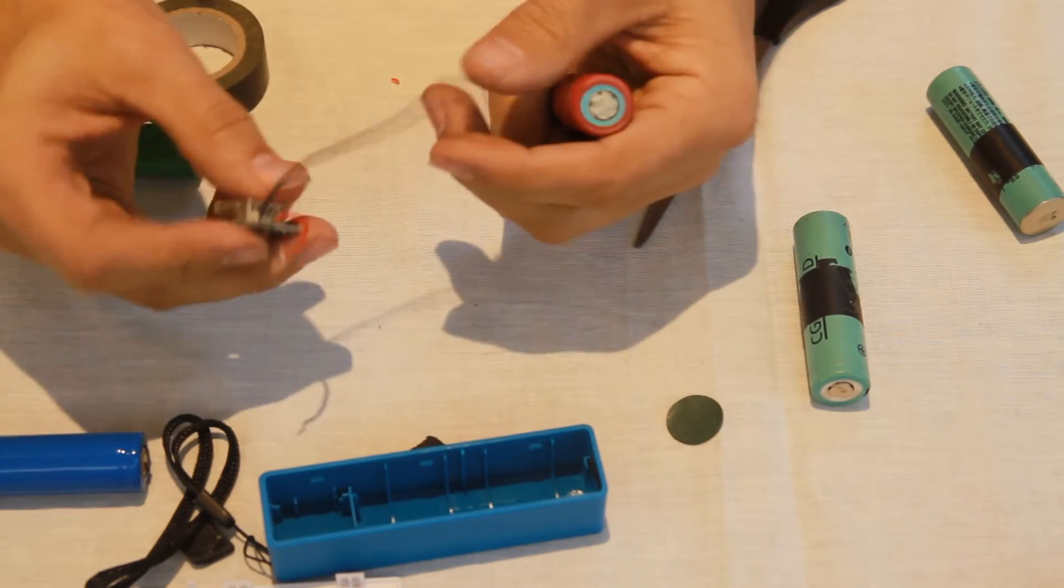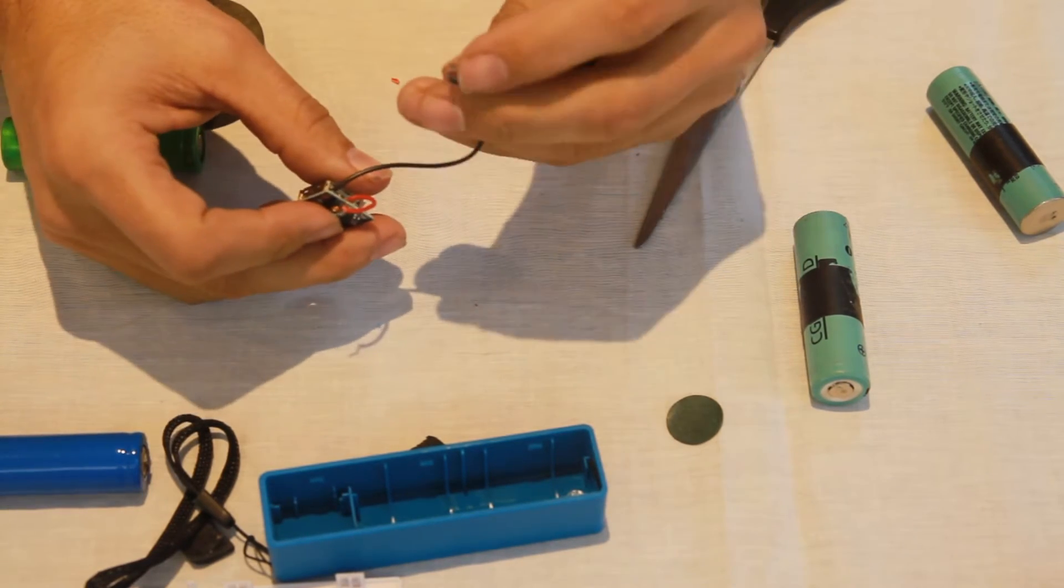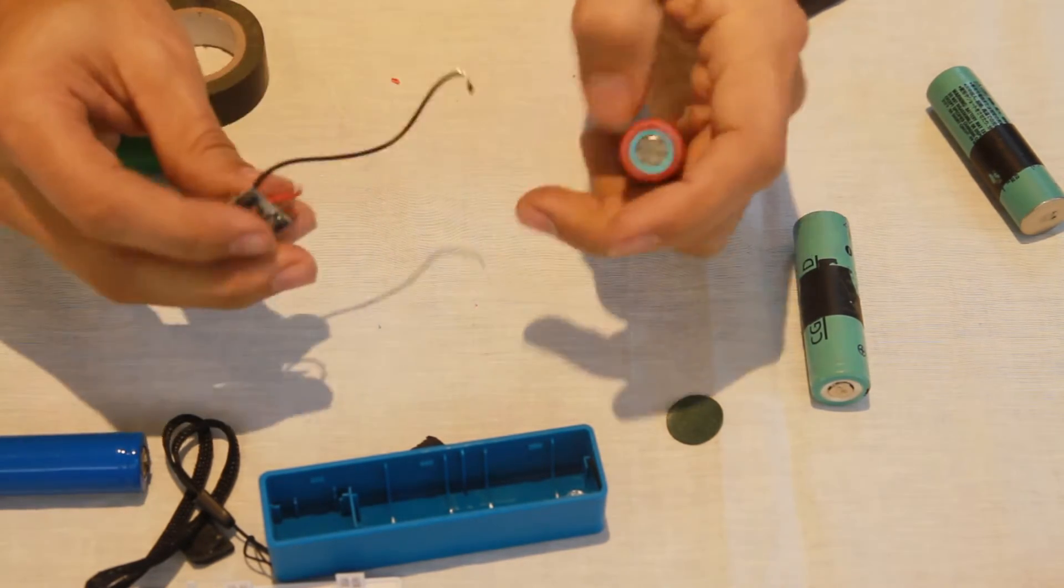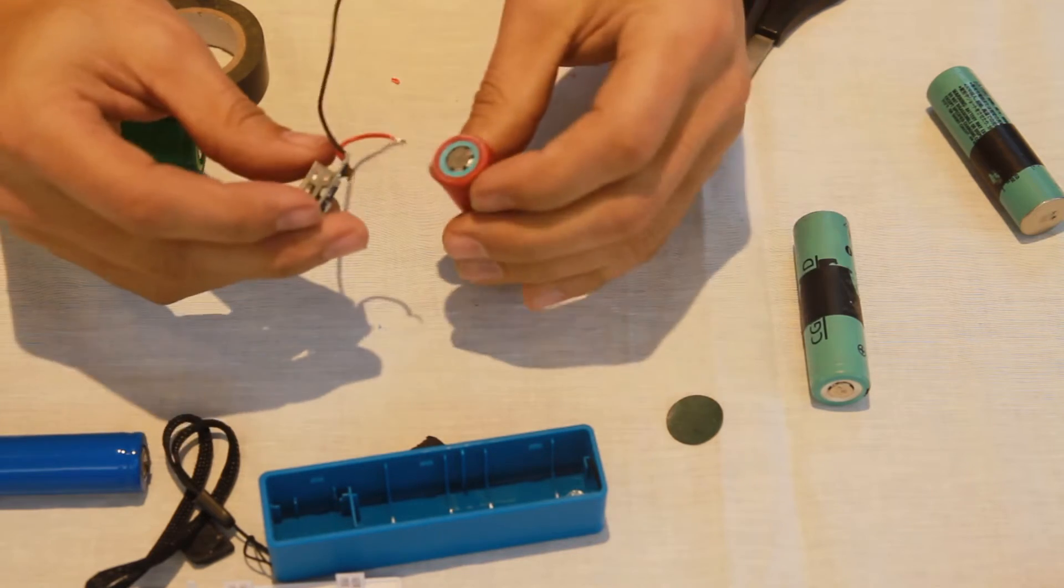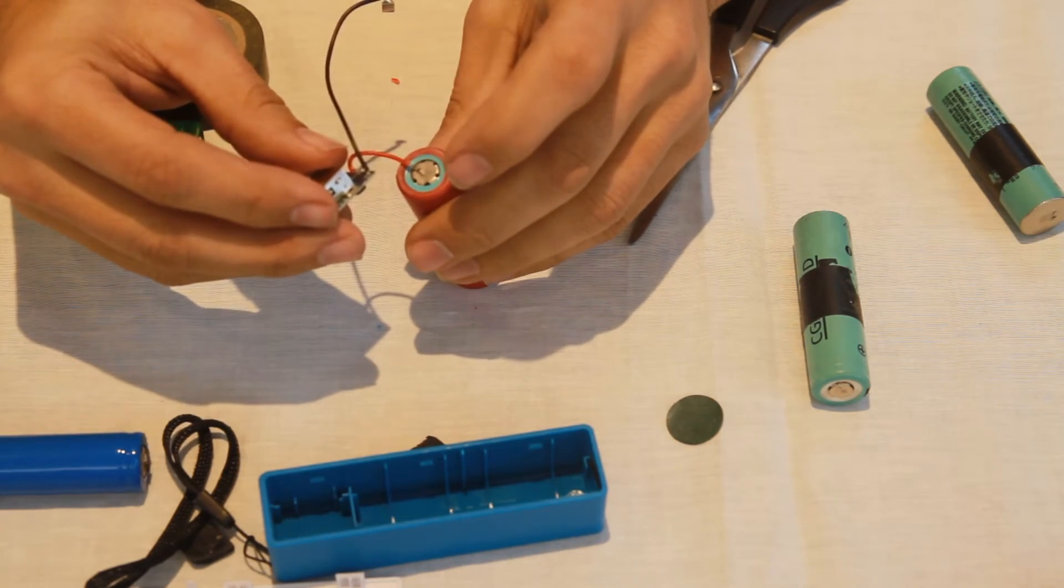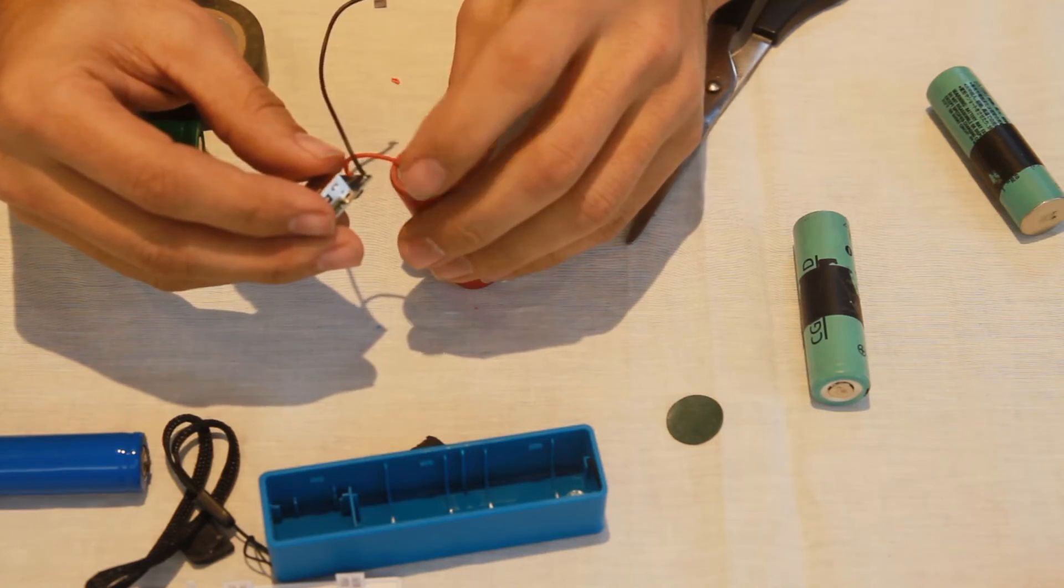Once you've got the charge unit out, don't worry too much if you don't actually manage to keep these tabs - they can fly off fairly easily. Because we're going to solder these on. Now if you haven't got a soldering iron you can just push them on there and put a bit of glue on there from a glue gun, or you can just tape it with insulation tape.